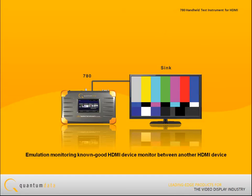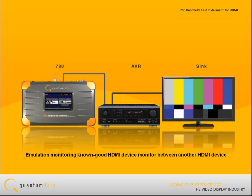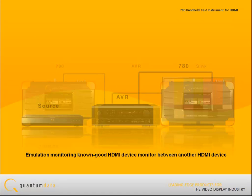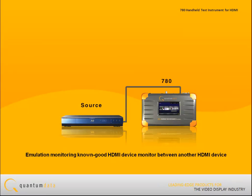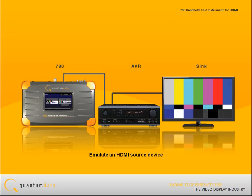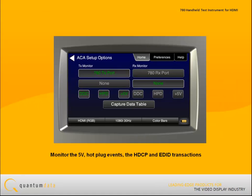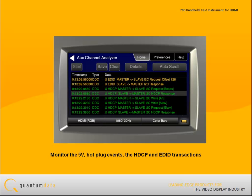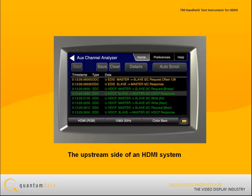The emulation monitoring option enables you to use the 780 as a known good HDMI device and monitor the connection sequence events and transactions between it and another HDMI device in the HDMI installation. For example, the 780 can emulate an HDMI source device, enabling you to monitor the 5V and hot plug events and the HDCP transactions between the 780 and the display device or repeater device — the upstream side of an HDMI system.